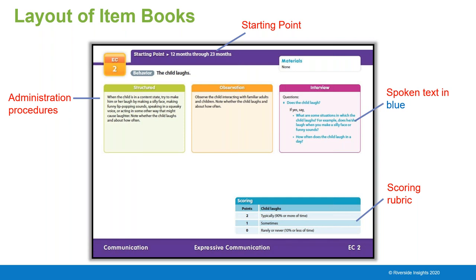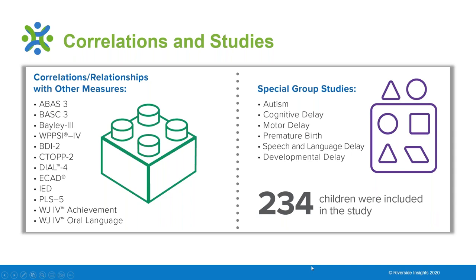We also have a rubric of possible scores and guidance for which score would be best in the situation. For the BEES, correlation studies were conducted and the correlations were very strong. Our technical manual has a breakdown of all this information. We also conducted special group studies looking at autism, cognitive delays, motor delays, premature birth, speech and language delays, and developmental delays. 234 students were in these special group studies.